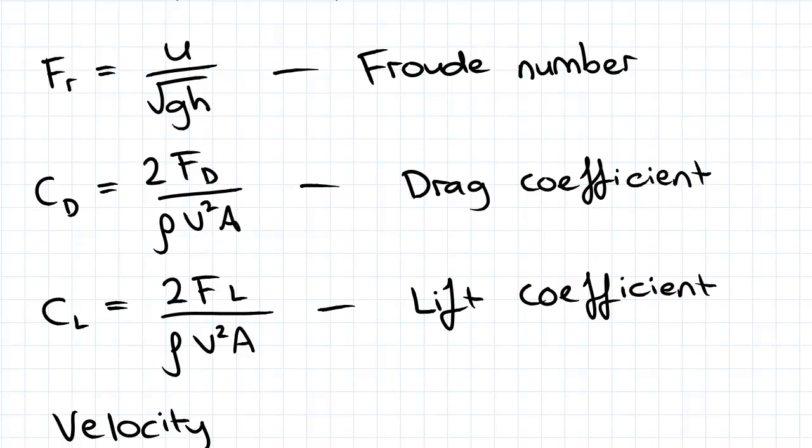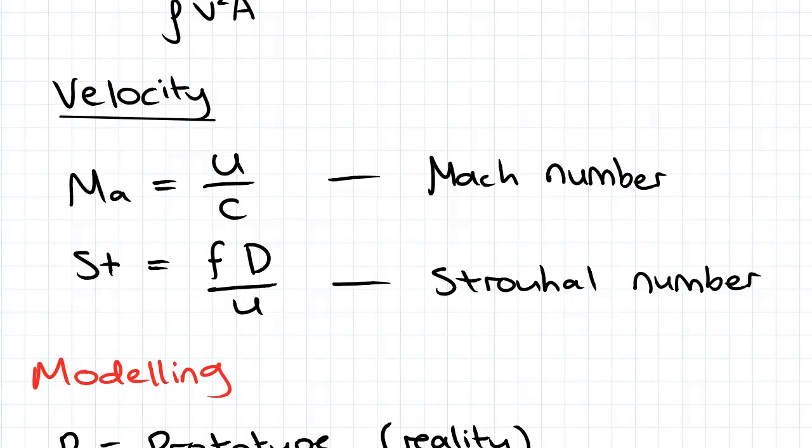We won't see these much, so drag coefficient we won't see too much, or we might see it more than lift coefficient. Velocity based groups you won't see at all really, but we've got Mach number, which is velocity divided by speed of sound, and we've got the Strouhal number, which is frequency times diameter on velocity. So these you won't really see.